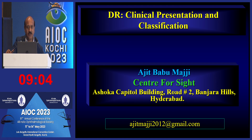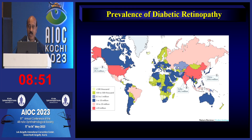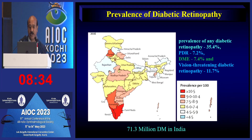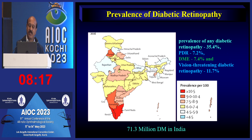Whether you are a retina specialist, medical retina specialist, or general ophthalmologist, you must be able to deal with diabetes because it is an epidemic. India has the highest prevalence of diabetic retinopathy, and about 35% of all diabetics are affected by some form of it — you cannot escape managing diabetic retinopathy. Three major stages must be identified: proliferative diabetic retinopathy, diabetic macular edema, and sight-threatening retinopathy, which accounts for approximately 11% of cases.